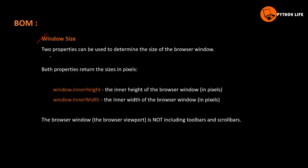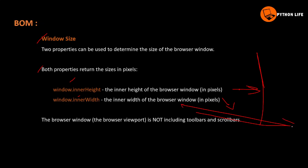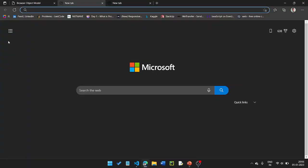Now let's look at window size. Two properties can be used to determine the size of the browser window: window.innerWidth and window.innerHeight. These give the width and height in pixels. Note that this window size does not include toolbars and scrollbars.